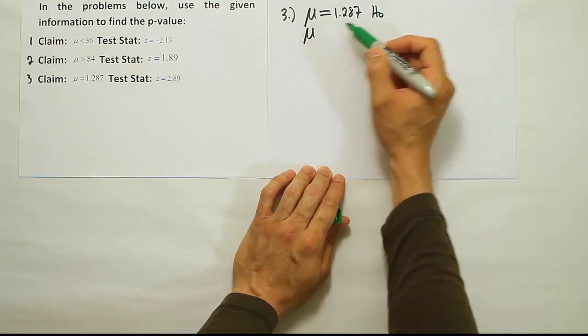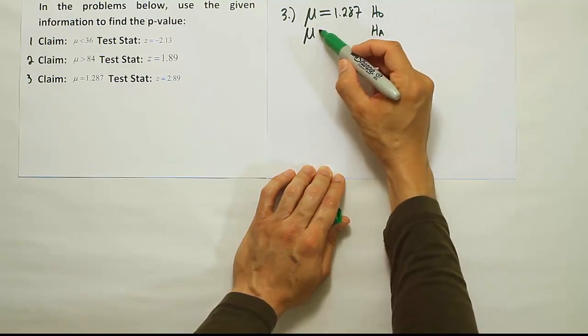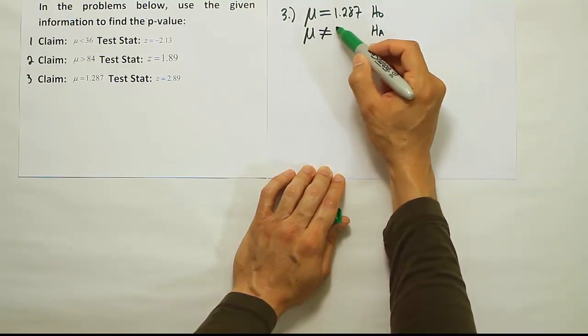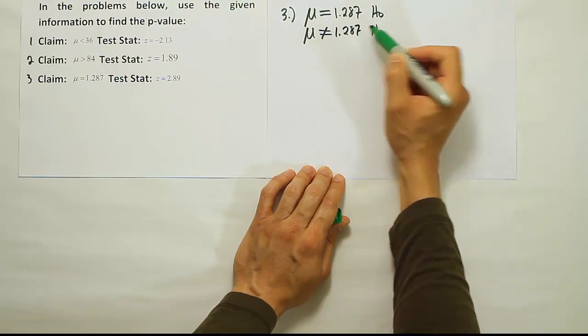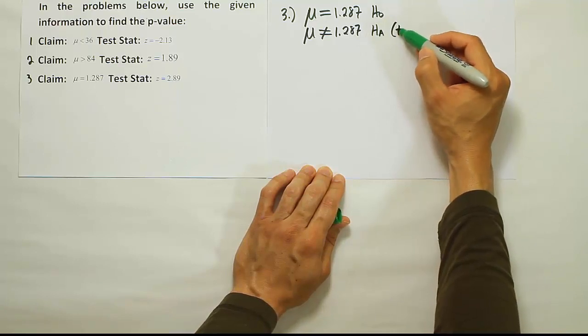So we don't need H₀ to figure out what type of test we're dealing with. We need Hₐ, so if this is H₀, then Hₐ must be the opposite of that or not equal to. And the rule says that if it's not equal to for Hₐ, it's going to be a two-tailed test.